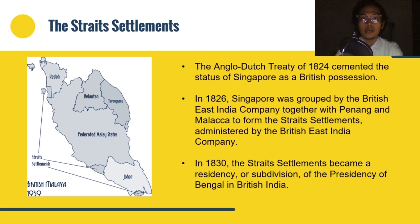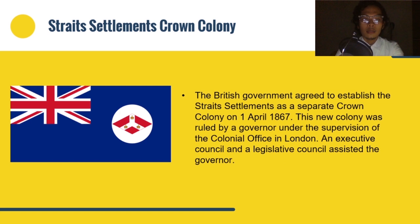As Singapore continued to grow, deficiencies in the Straits Settlements' administration — caused by overpopulation and public health care problems — became serious, and Singapore's merchant community began agitating against British Indian rule. The British government agreed to establish the Straits Settlements as a separate Crown Colony on April 1, 1867. This new colony was ruled by a governor under the supervision of the Colonial Office in London, assisted by an executive council and a legislative council.